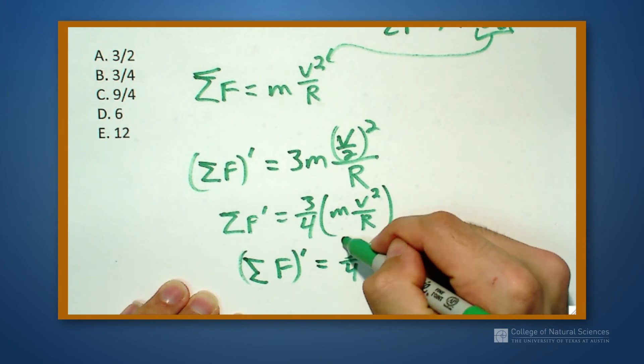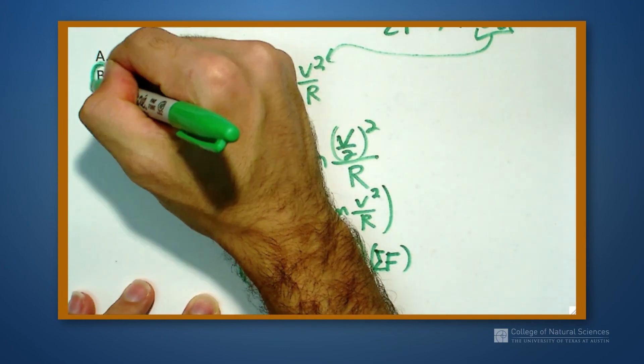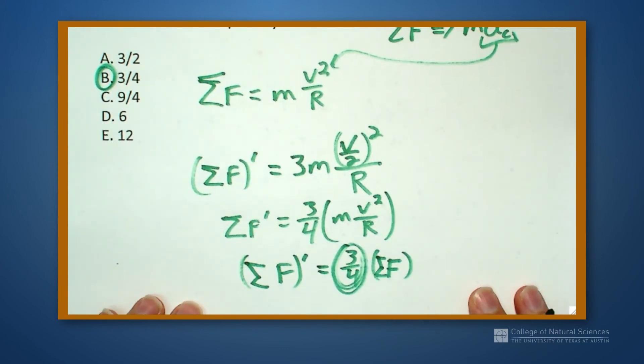So I know I have to multiply by a factor of three-fourths in order for me to do the same curve with half the speed but three times the mass.